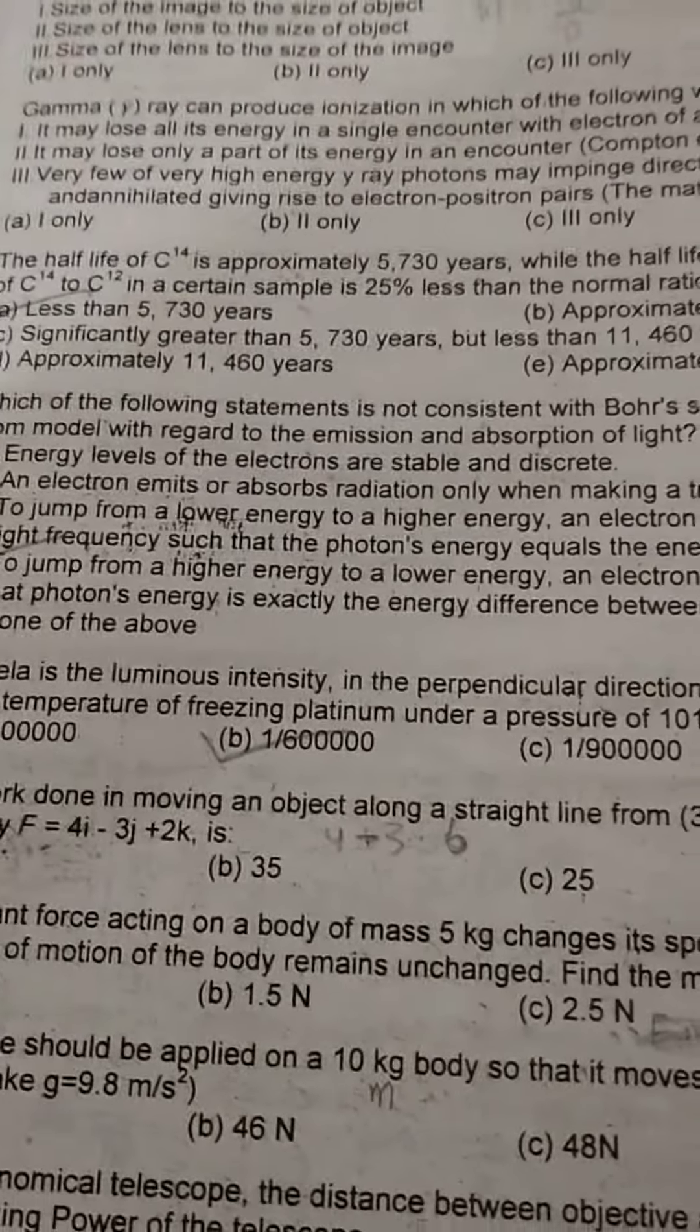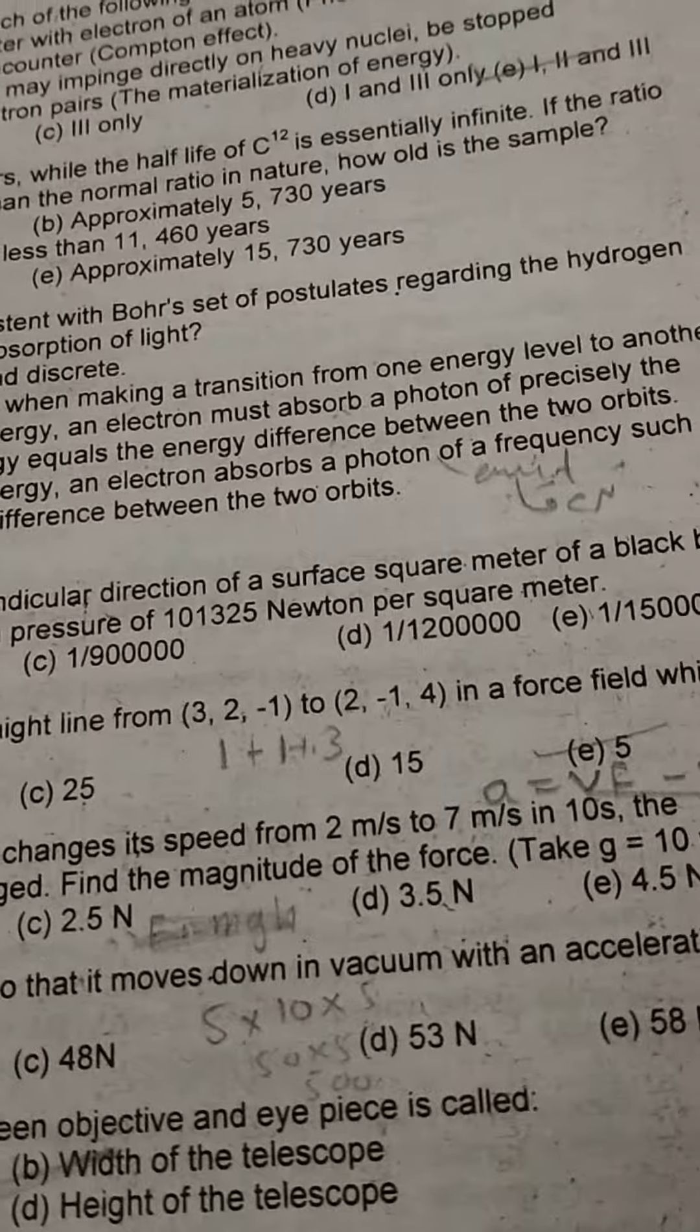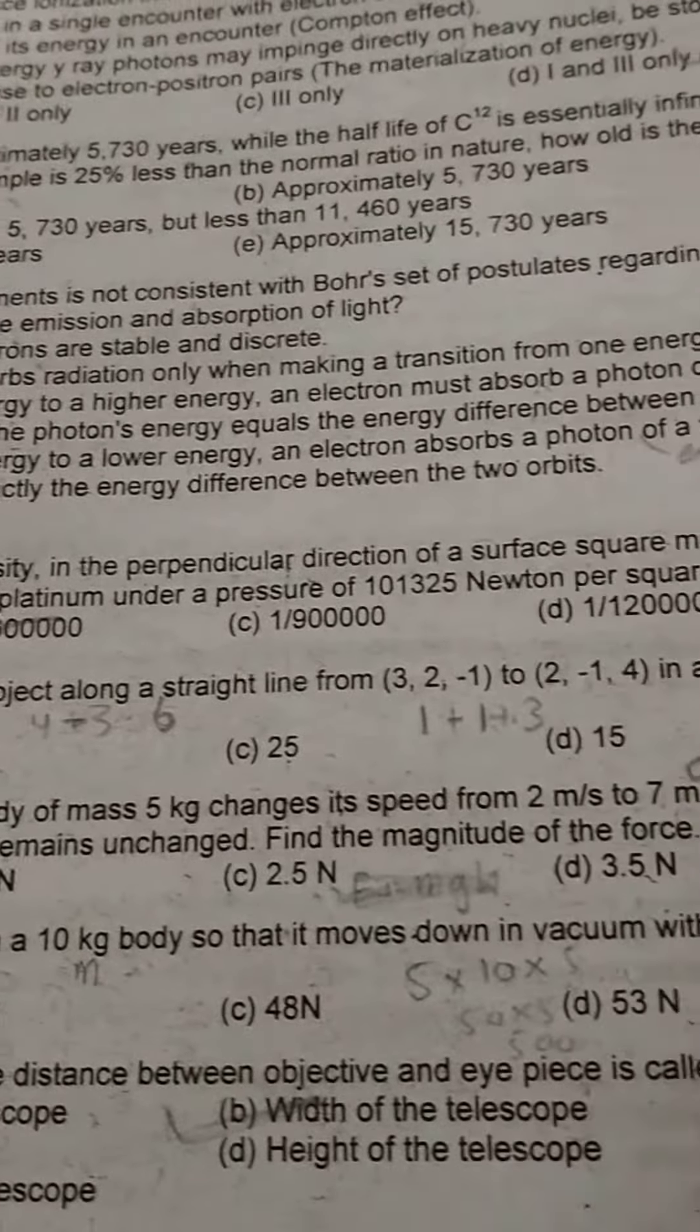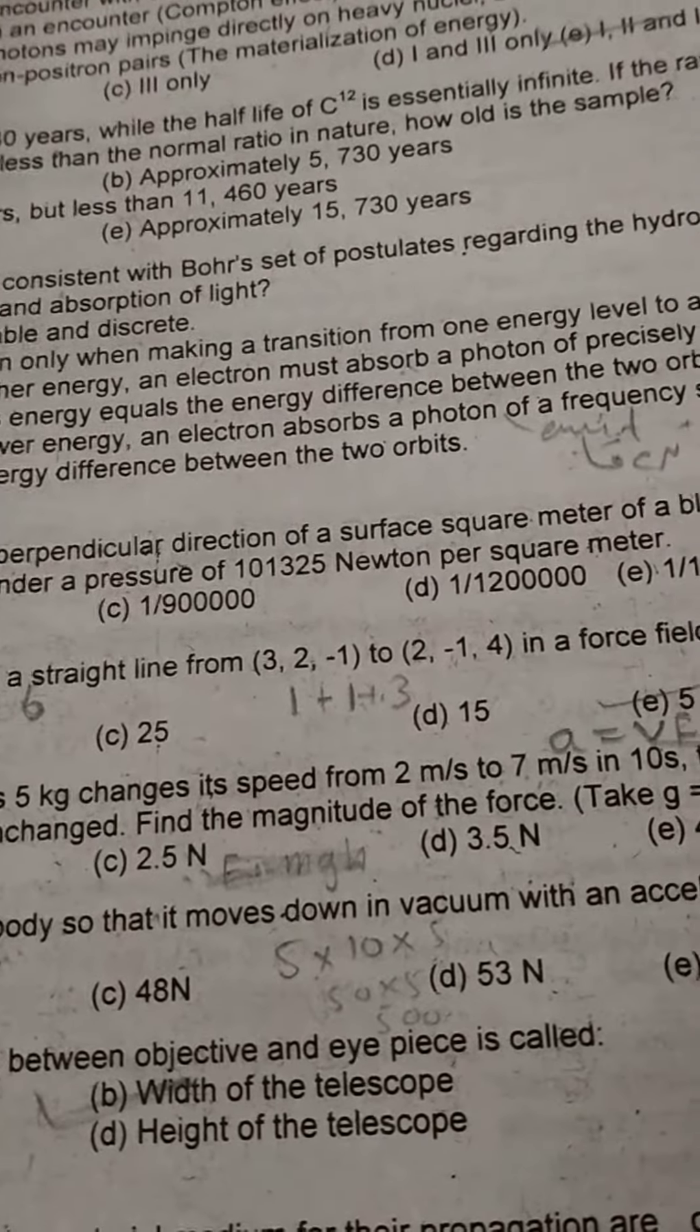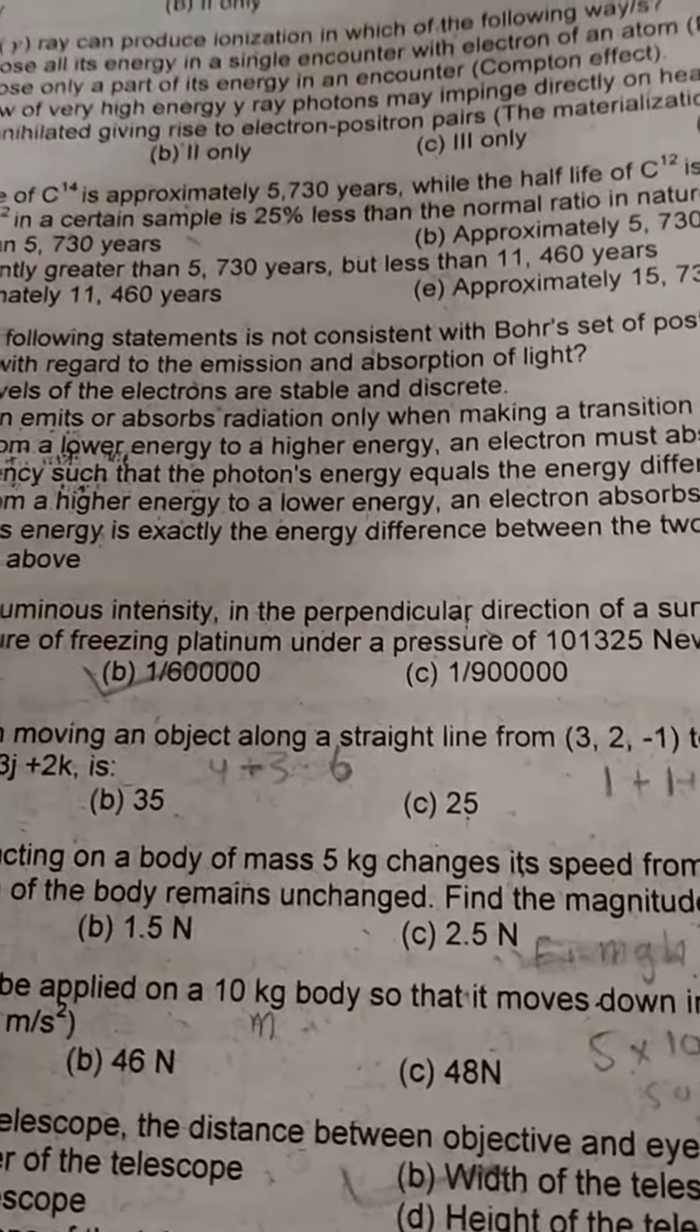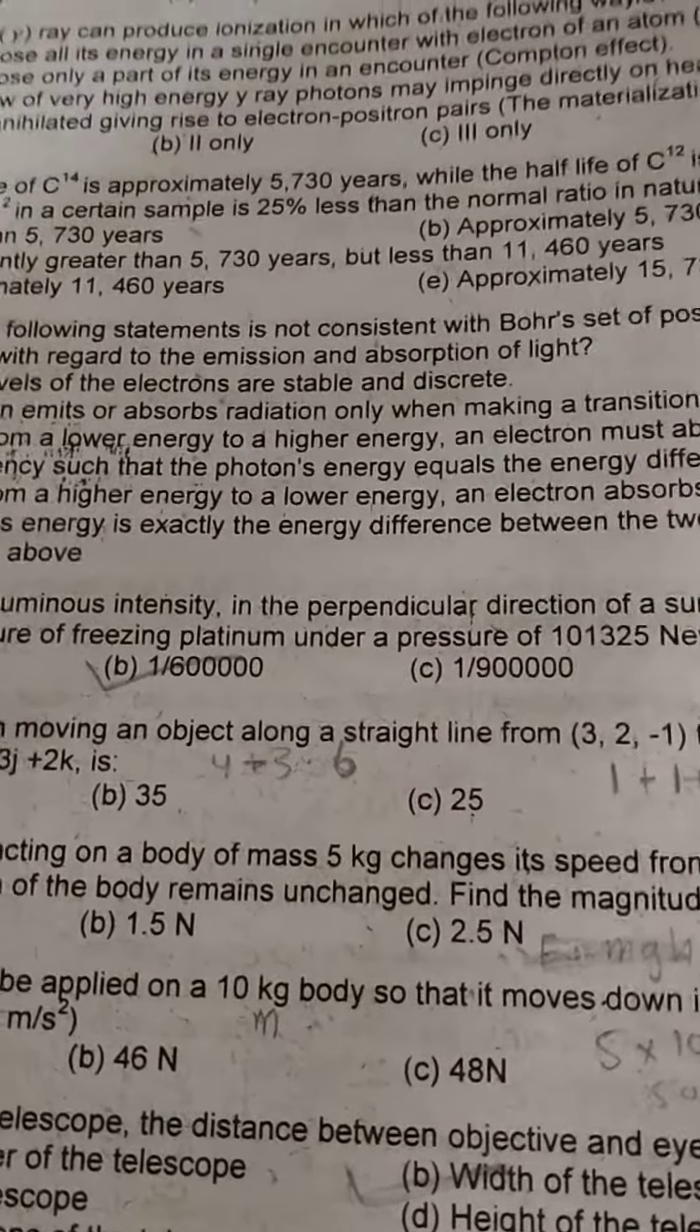Then, candela is the luminous intensity in the perpendicular direction of a surface square of black body at the temperature of freezing platinum under a pressure of 10132 newtons per square meter. So the answer will be 1 upon 60,000.